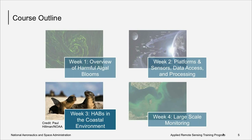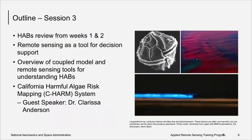Here's the course outline. This week we're talking about HABs in the coastal environment. This week's objective is to describe how coupled remote sensing and modeling approaches are used in decision support tools in the coastal marine environment. First, we'll review material from weeks one and two, then I will present how remote sensing observations can be used to identify algal blooms using case studies, and present coupled remote sensing and modeling approaches to forecast harmful algal events.